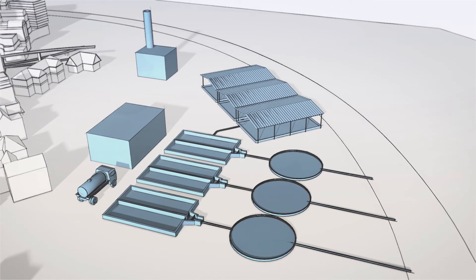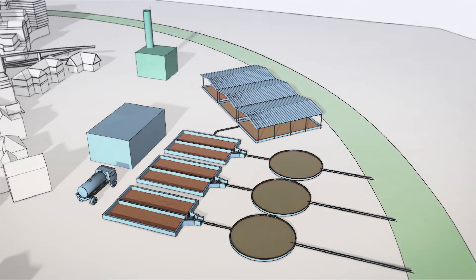Here you can see a typical fecal sludge treatment plant. Liquids and solids are separated in settling tanks. The solids are then transferred to drying beds, while the liquid part is often treated in ponds. If treatment is effective, fecal sludge is described as treated on the SFD and therefore safely managed.